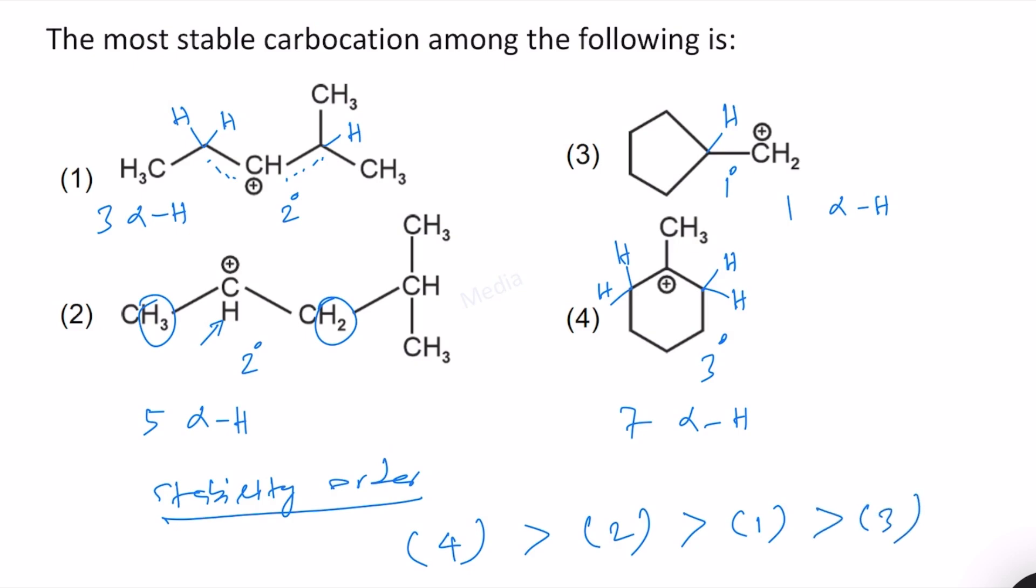And therefore, the most stable one is structure 4, the tertiary carbocation having 7 alpha hydrogen atoms will be the most stable carbocation. Therefore, option 4 is correct.